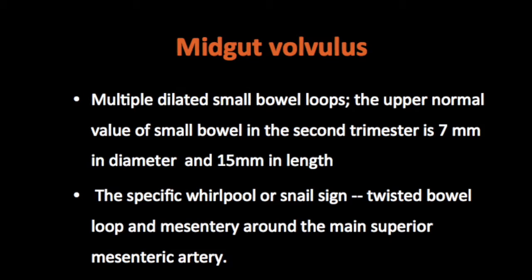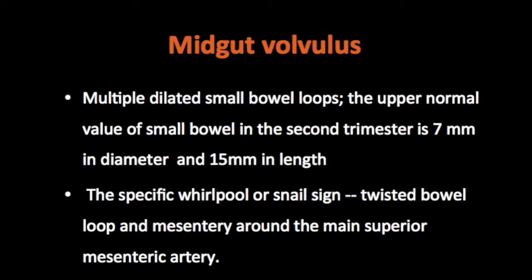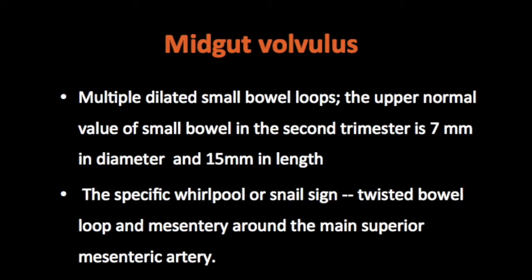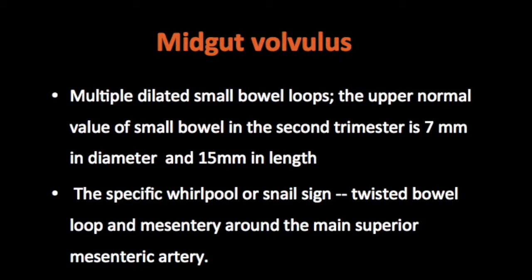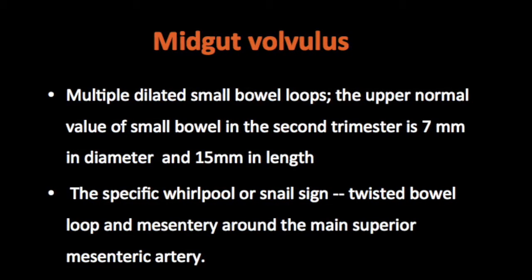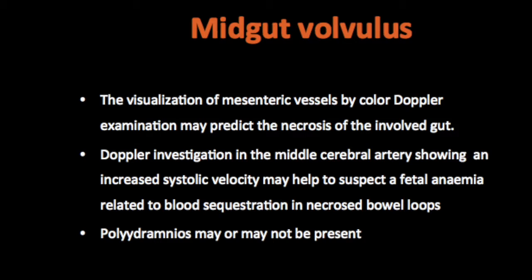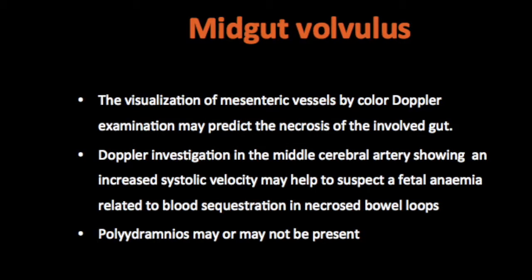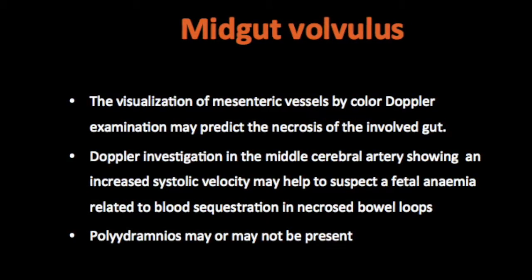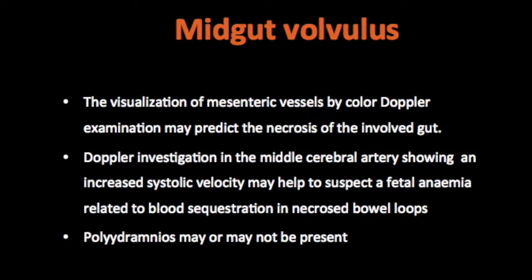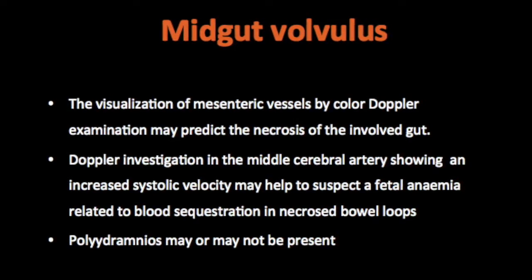There are multiple dilated small bowel loops seen. The upper normal value of small bowel loops in the second or third trimester is 7 mm in diameter and 15 mm in length — some studies say 8 mm and 16 mm in length — but by and large 7 mm diameter and 15 mm length is the key threshold. The specific whirlpool or snail sign is a twisted bowel loop and mesentery around the main superior mesenteric artery, which we also normally see in midgut volvulus in the pediatric age group.